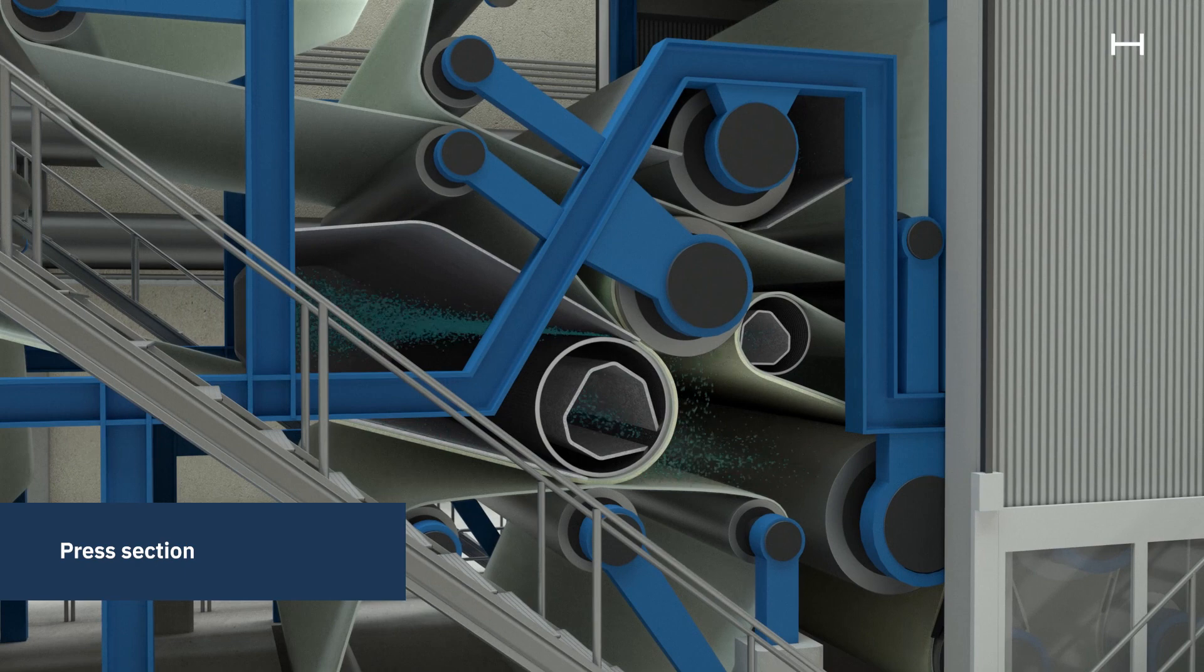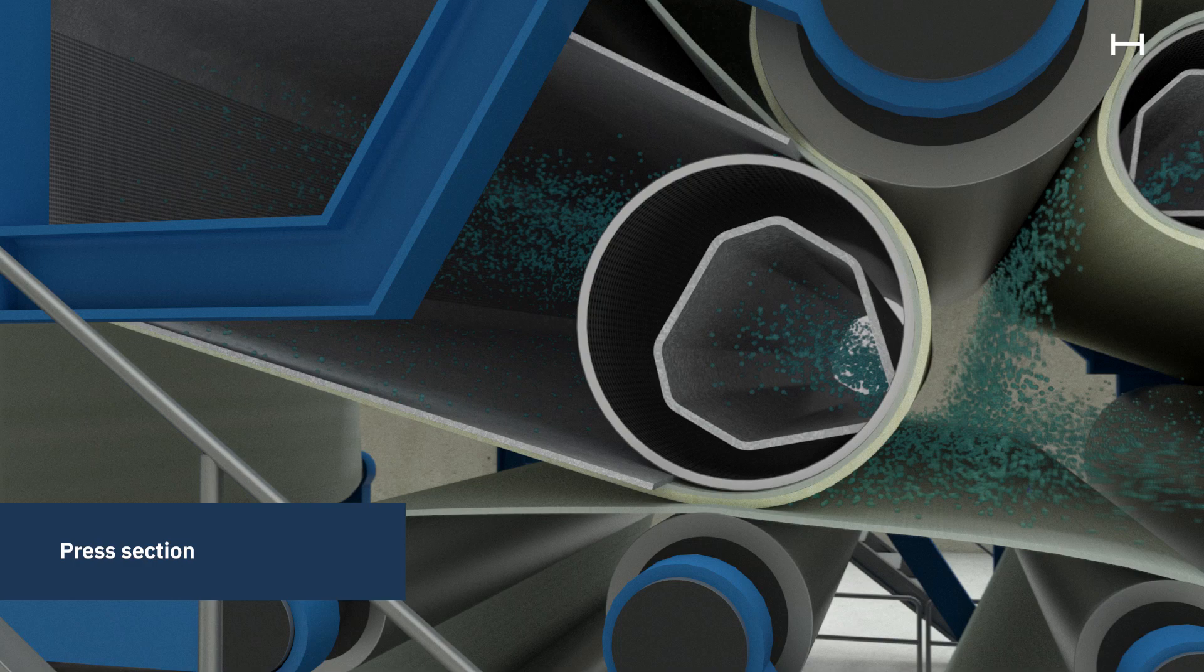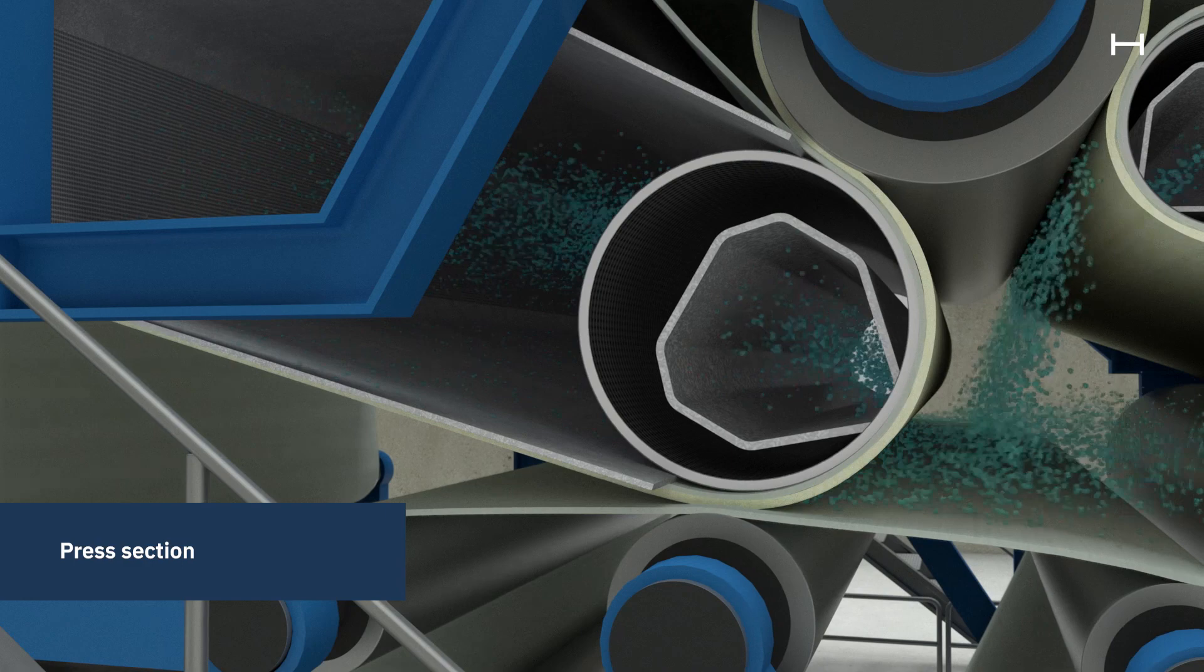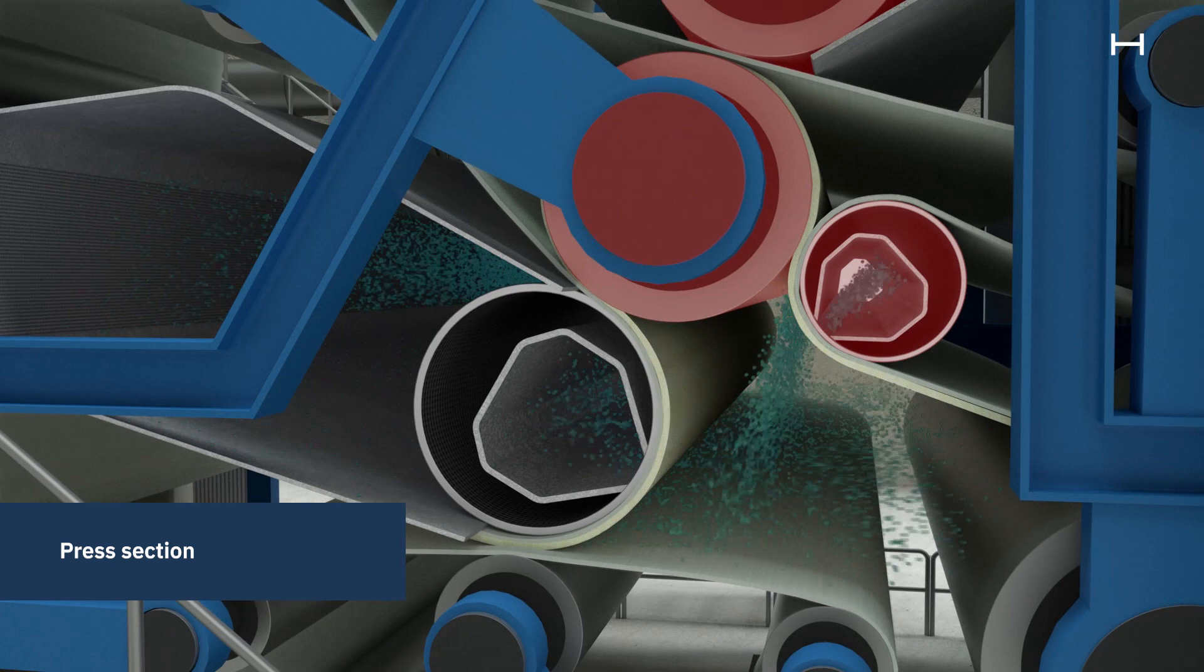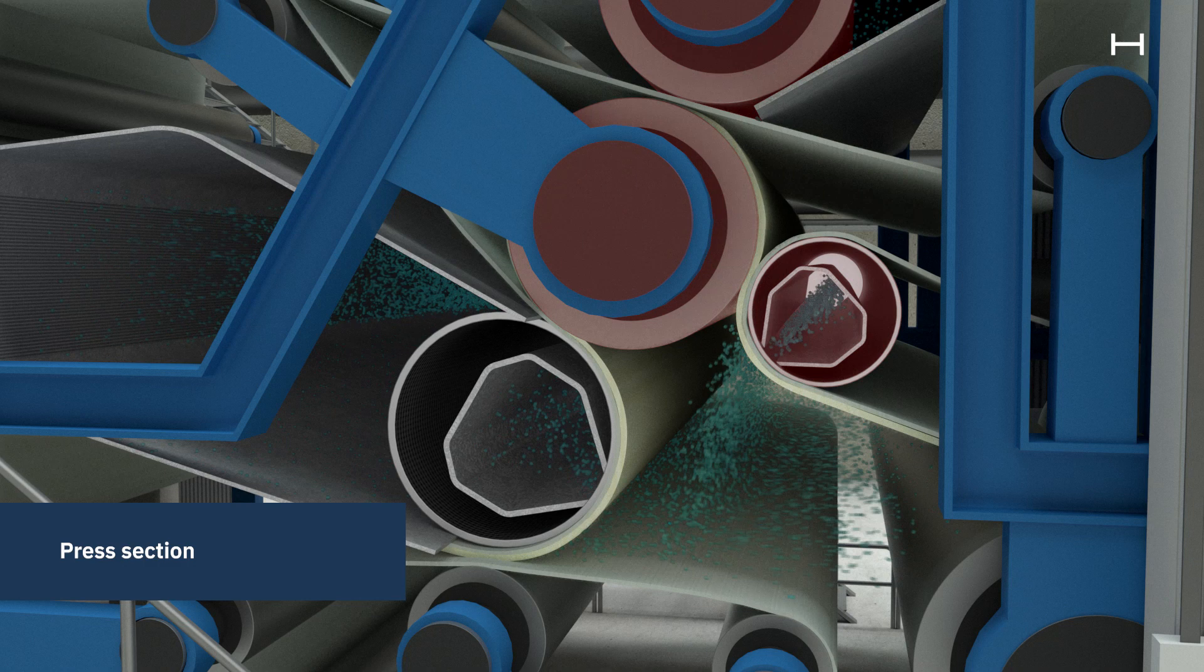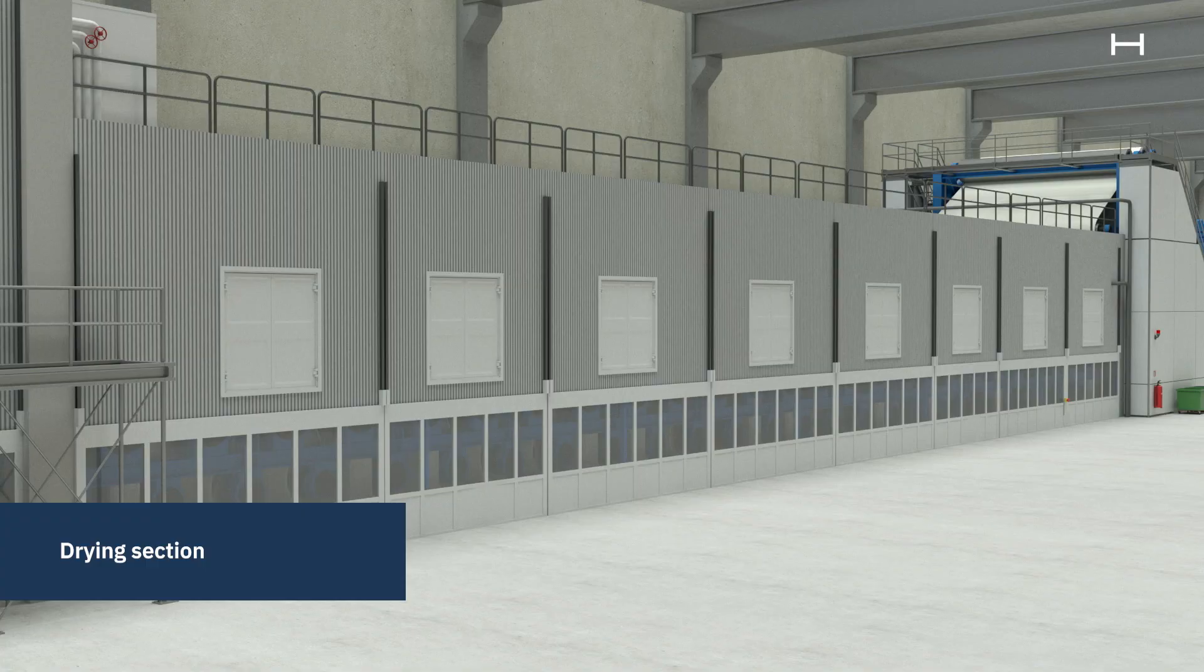When entering the press section, the paper web has a dryness of around 20%, so it still contains 80% water. To increase the dryness, the paper web is compressed between two felts in the press nib. When the pressure is released, the felts suck water from the web like a sponge. This is repeated in two more press nibs. The last press nib is called a shoe press, where the pressure time is extended. This increases the dryness more than a felted roll nib. After the press section, the dryness is around 50%.